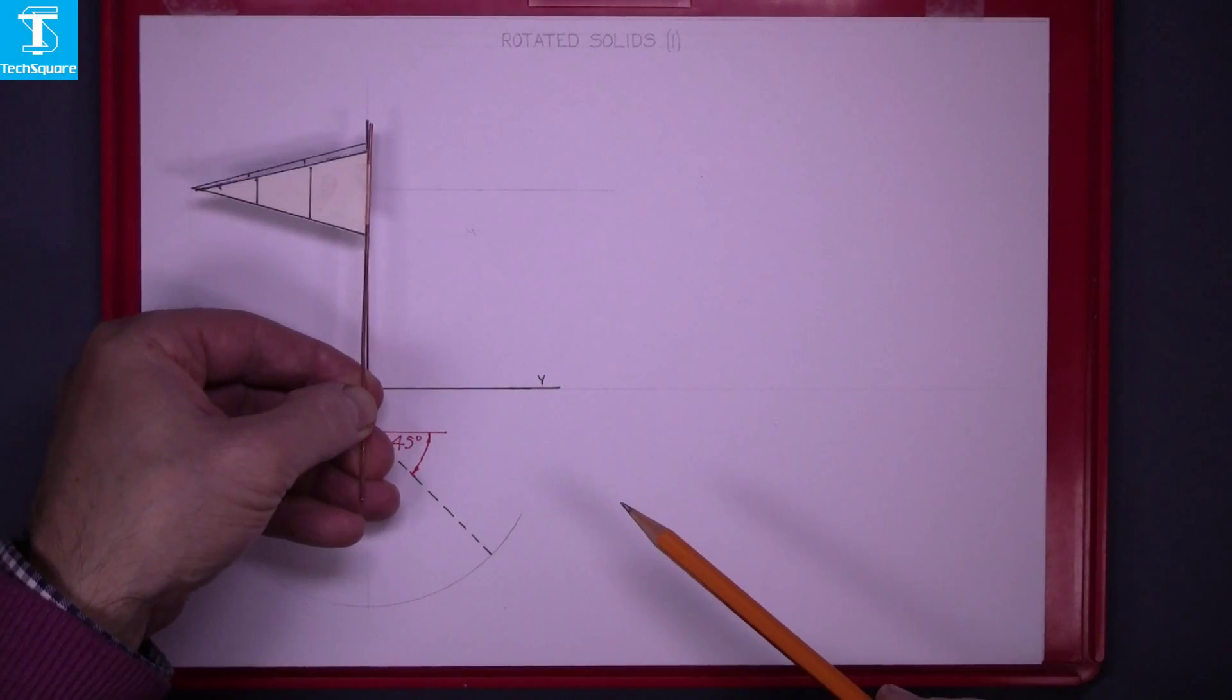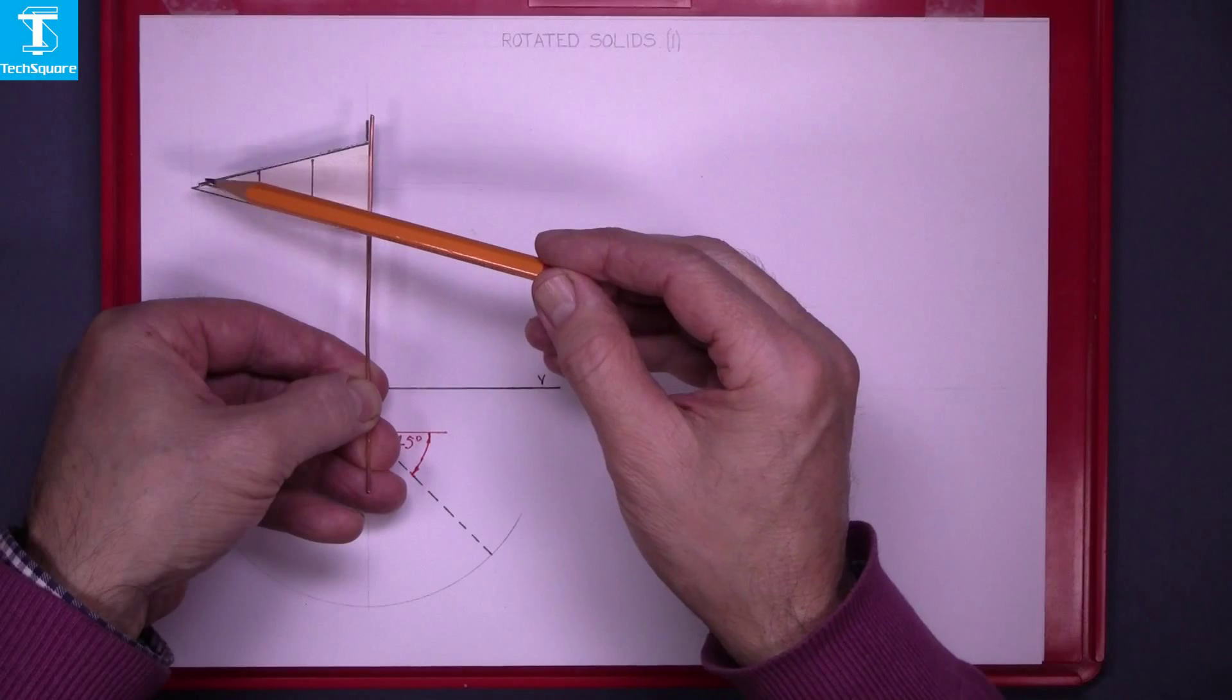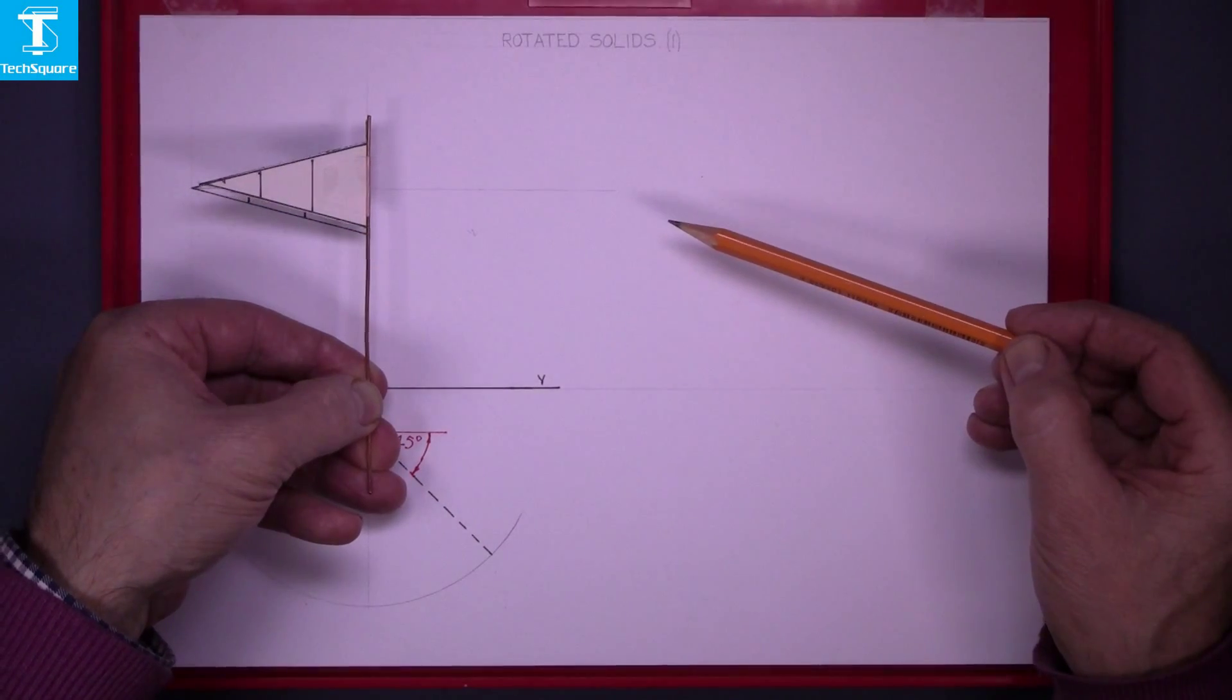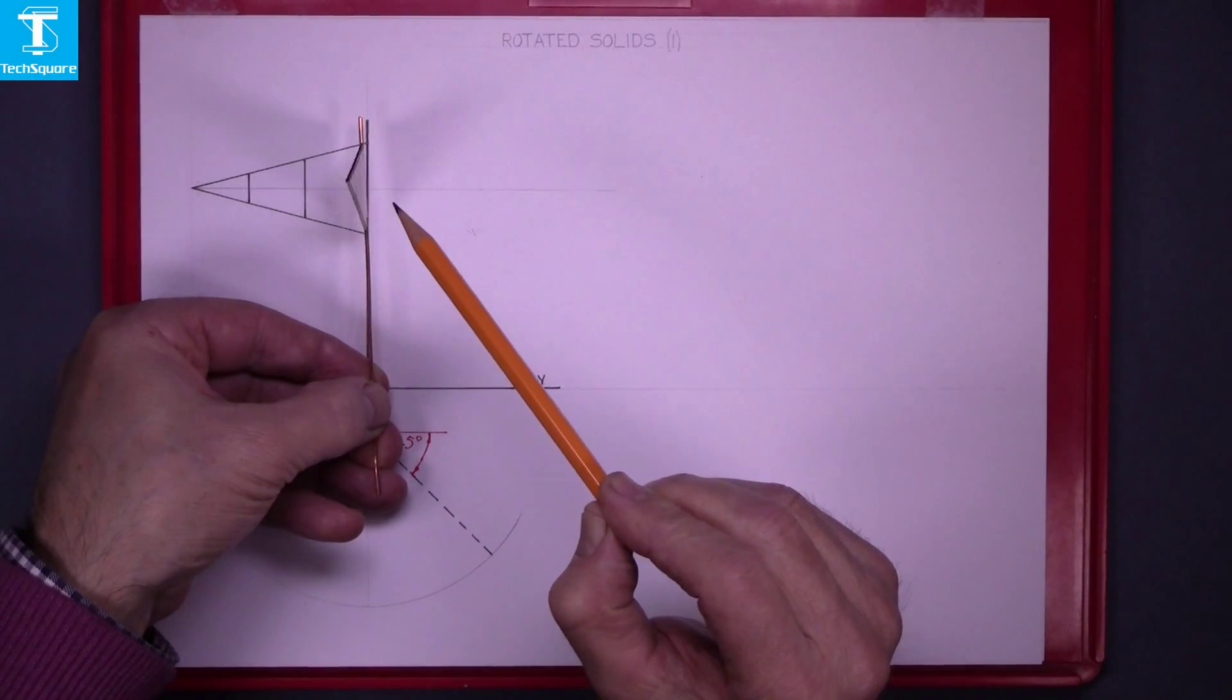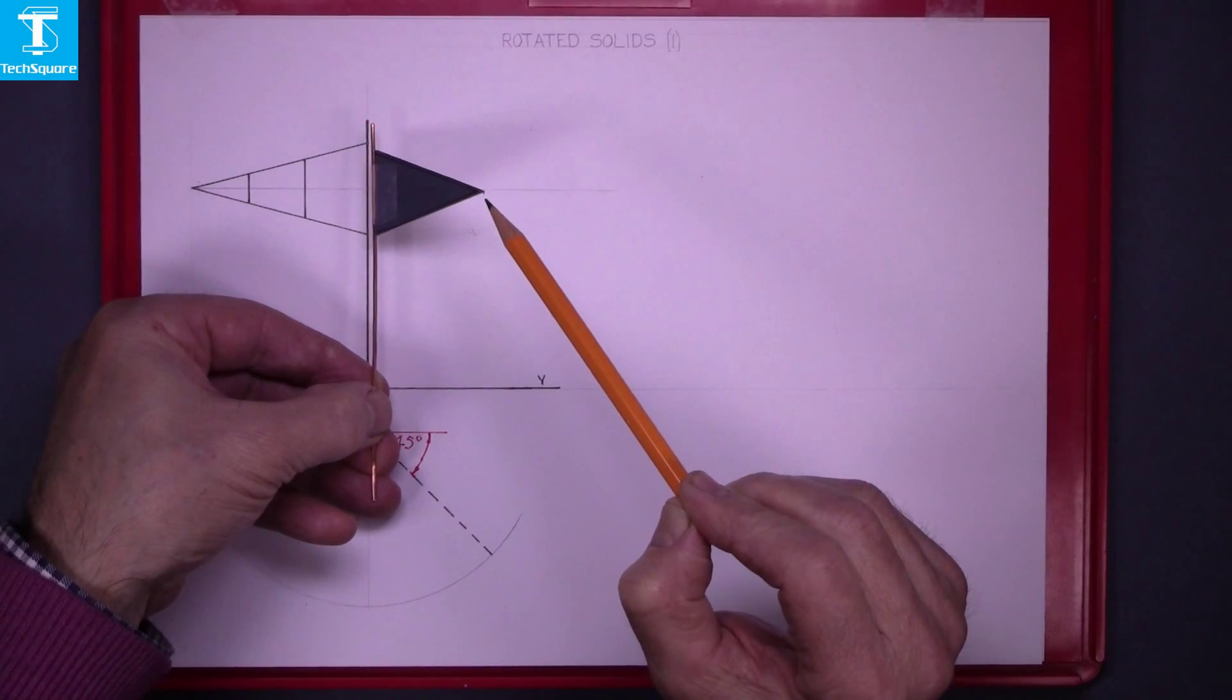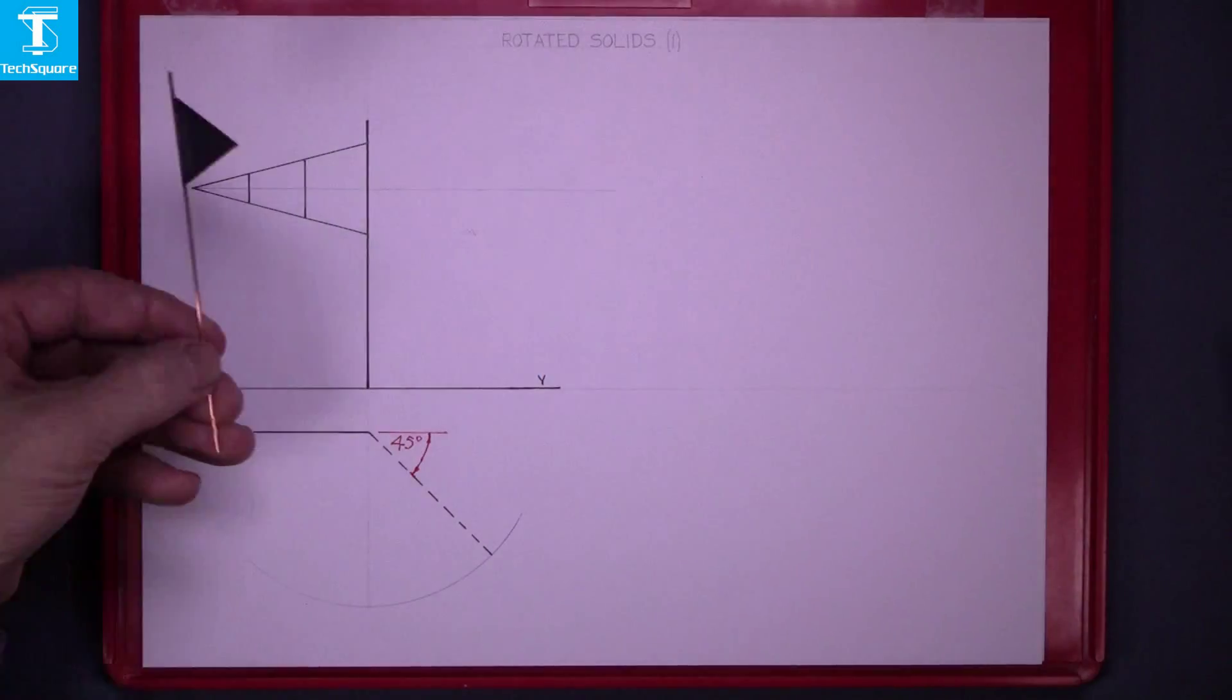When we look at the rotation in elevation, as I roll the flag over, you'll see the point moving along this horizontal line. The endpoint is moving along the horizontal line until we get to the position that we require. Now we are asked to draw the elevation of it in that new position.